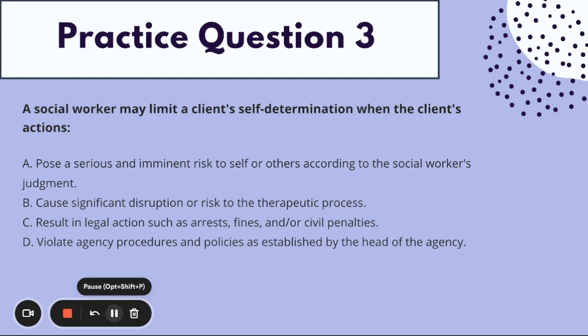We're going to rule out D — violating agency procedures and policies established by the head of the agency. It doesn't matter what the agency's policies are; what matters is that we're respecting the client's right to self-determination and following the code of ethics. Some agency procedures don't actually protect the client, so D is out. C is also out — result in legal actions such as arrests, fines, or civil penalties. We serve clients who have arrests or face civil penalties; we would not limit their right to self-determination because of this, and that's not appropriate.